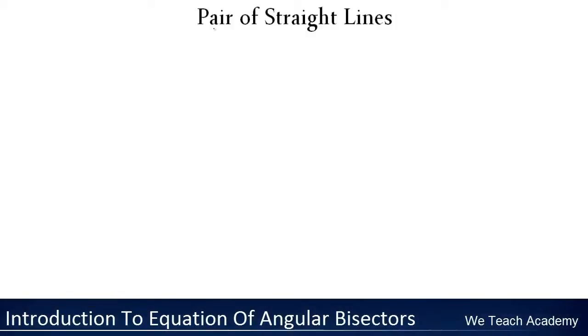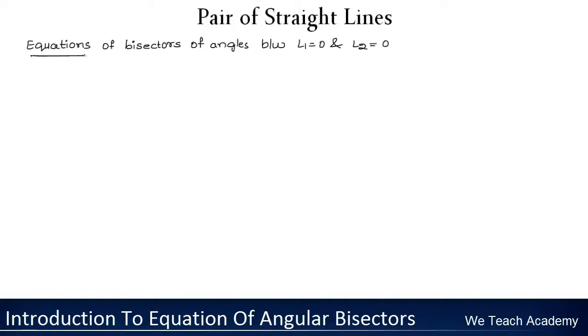Hello friends, welcome to VT Academy. In this presentation we are going to discuss a concept called pair of straight lines, and we will be discussing about equations of bisectors of angles between the lines L1 equal to 0 and L2 equal to 0.